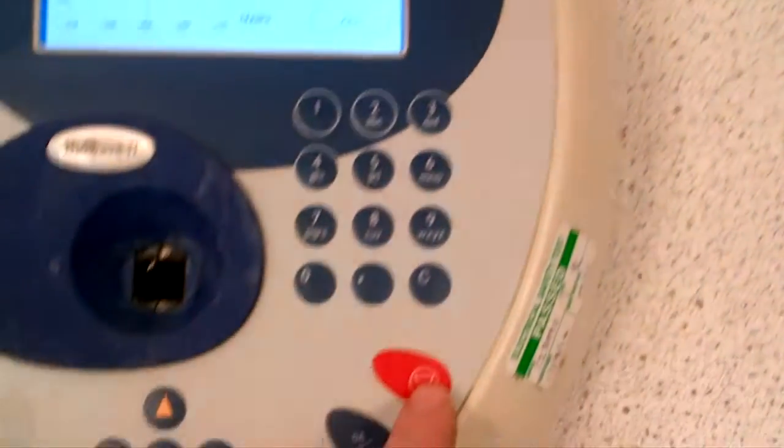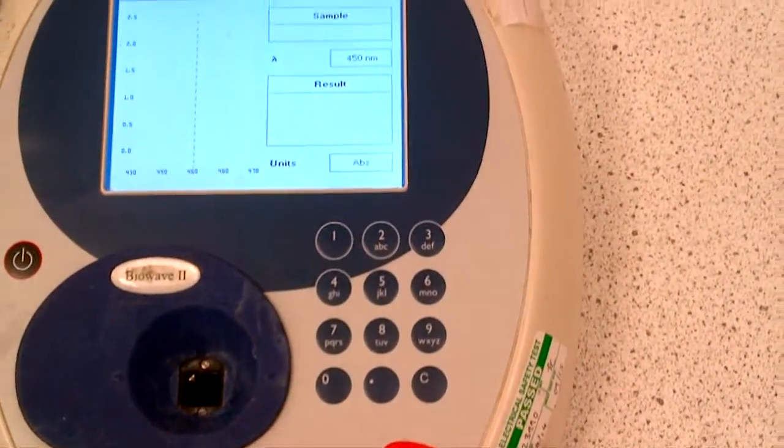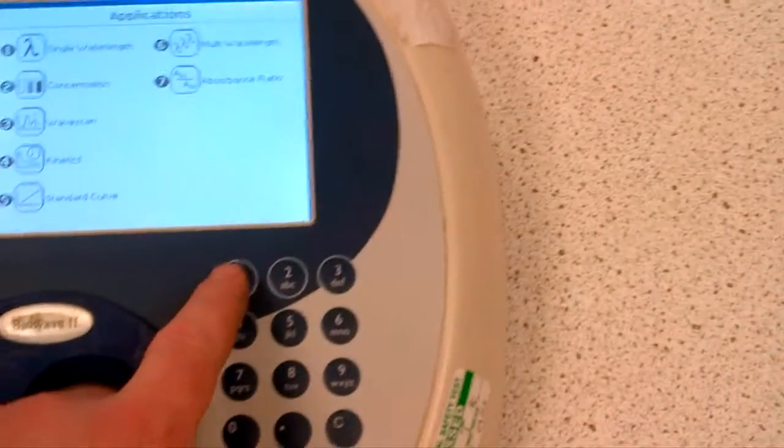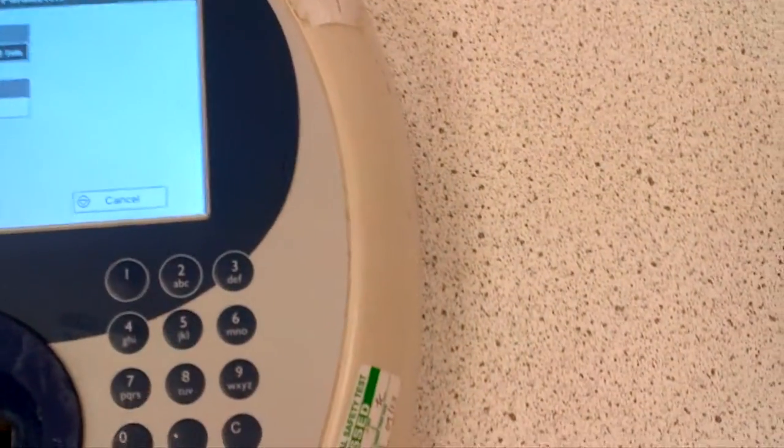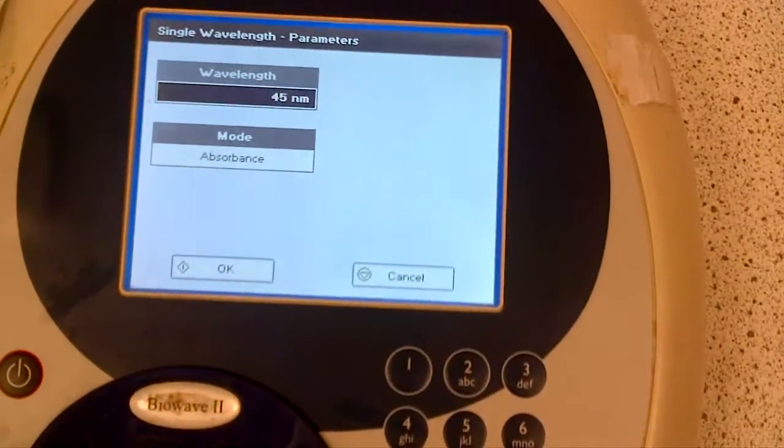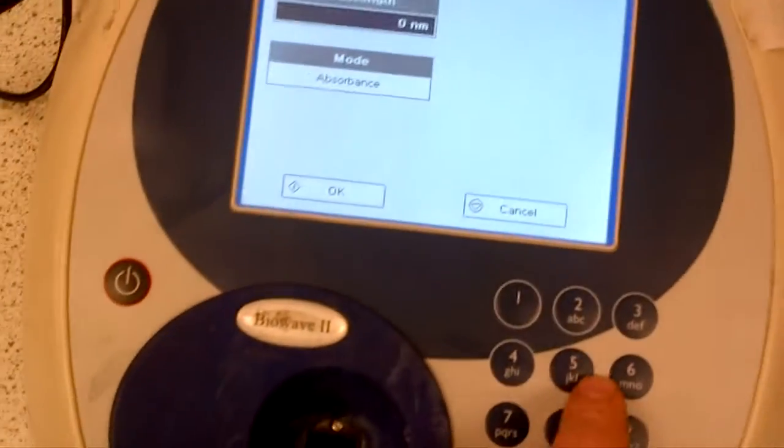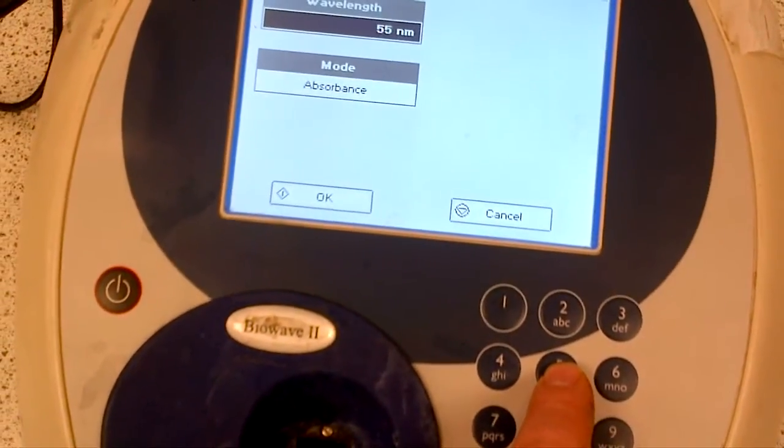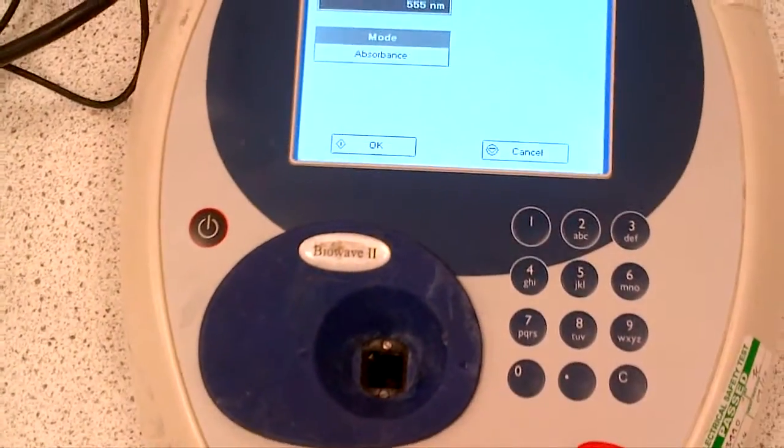If we're unhappy with that, we can go back with the red button, back to single wavelength and change as appropriate. So the C functionality, the C button, goes back and changes wavelength. So we could go for 555 and then press OK again, which is the green button.